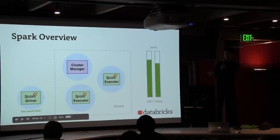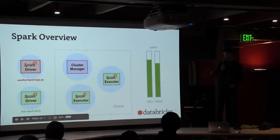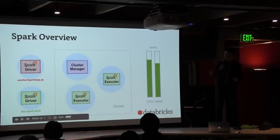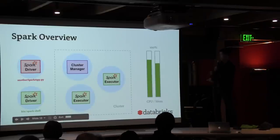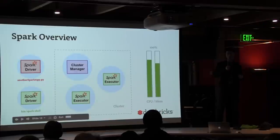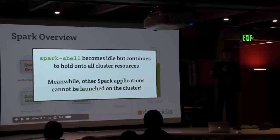This is a current limitation in Spark before 1.2. If another application comes in and tries to acquire as many resources as the Spark shell, it can't — there just aren't enough executors for the cluster manager to give out. Therefore, if the Spark shell becomes idle, as we've seen in the ETL job, it continues to hold onto all the cluster resources. This is pretty wasteful.